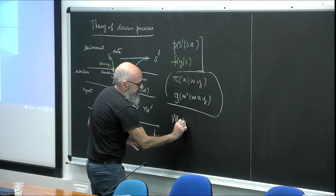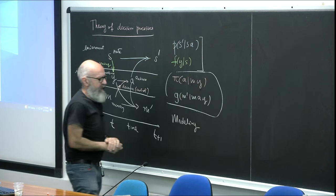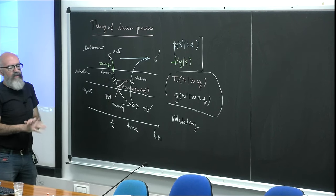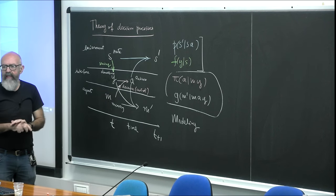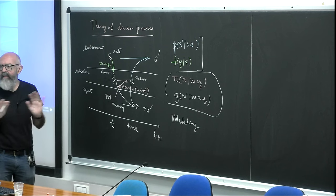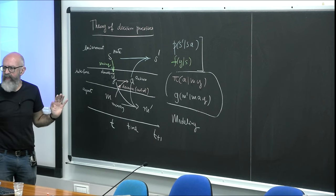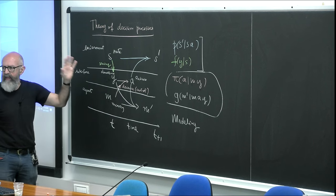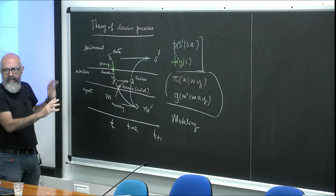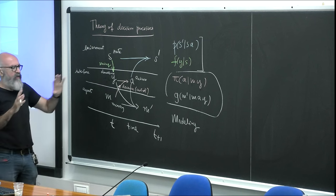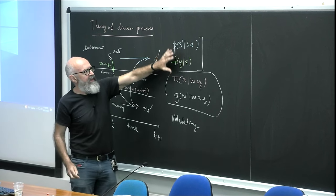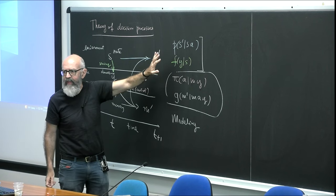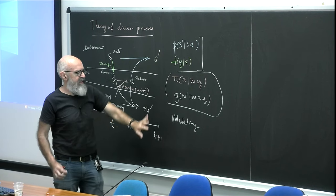One approach I would call modeling — the agnostic viewpoint — where you say: I don't know what my agent is actually interested in doing. I only want to collect data about my system. Having identified what all these things mean, I collect data and construct these probability distributions starting from observations. This is the agnostic viewpoint.